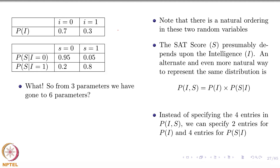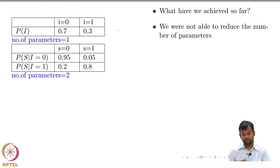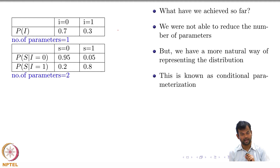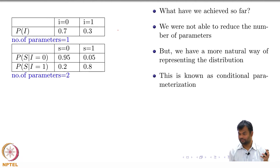I did this roundabout thing and ended with the same number of parameters, but I have given a more natural way of representing this distribution. This idea is known as conditional parameterization — instead of specifying the joint distribution directly, the parameters of the model are now conditional distributions. I give you two tables instead of one.